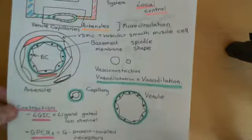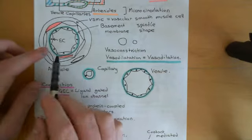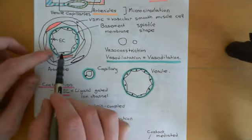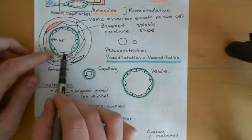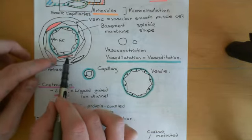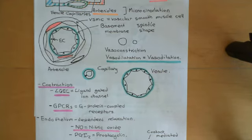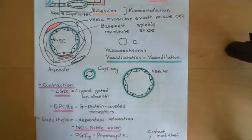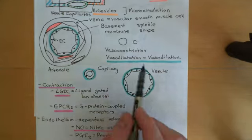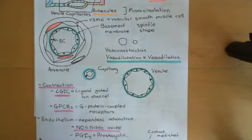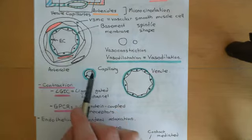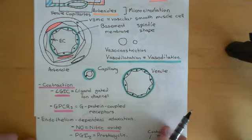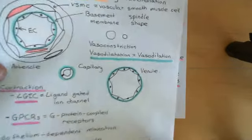We go back to the case where all of the endothelial cells can produce this effect, because the contact-mediated pathway requires endothelial cells to actually be in contact with the vascular smooth muscle cells, so only the endothelial cells of the arterioles could participate in that. But in the case of a diffusible factor, all of these endothelial cells can produce it, and it can diffuse back to the vascular smooth muscle cells of the arteriole in this local area.